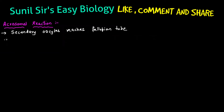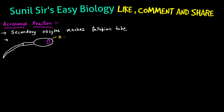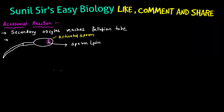The most important next event is the acrosomal reaction. When the secondary oocyte reaches the fallopian tube — that is the egg — the sperm will show the acrosomal reaction. In the head of the sperm there is an acrosome, which is formed from the Golgi body. The activated sperm will release chemicals from the acrosome. That chemical is called sperm lysin.